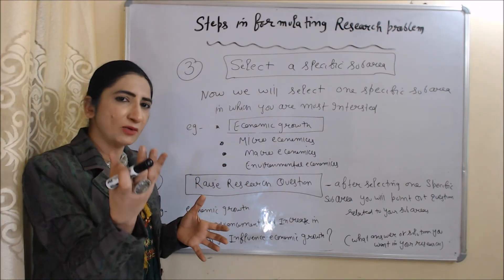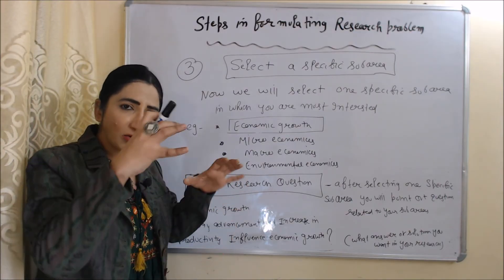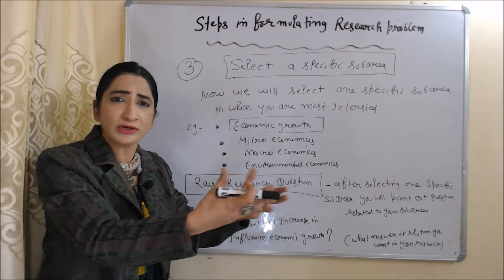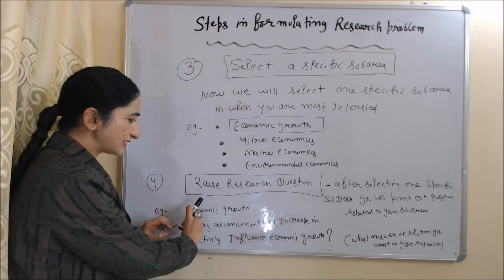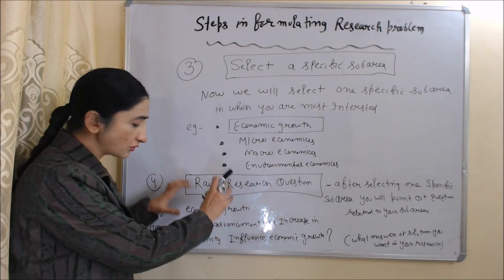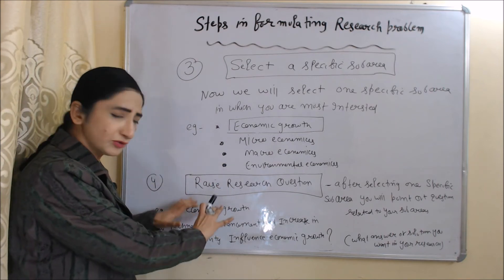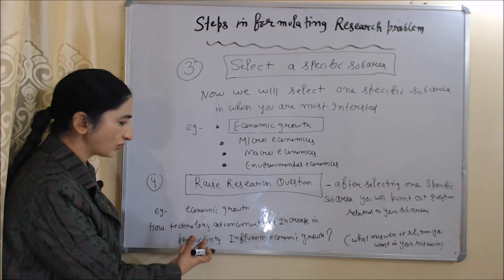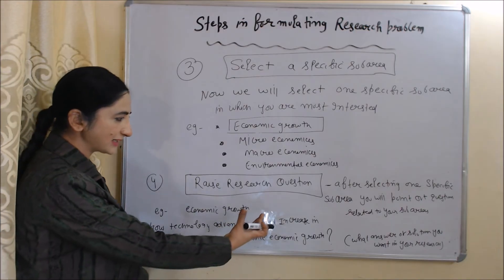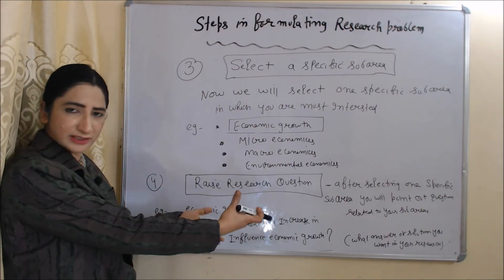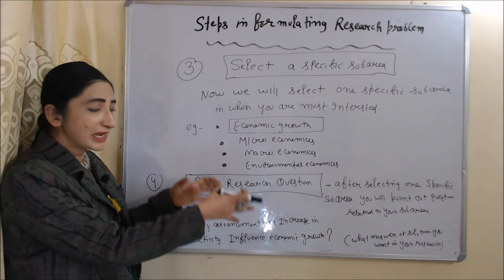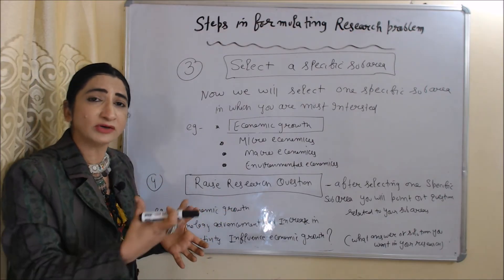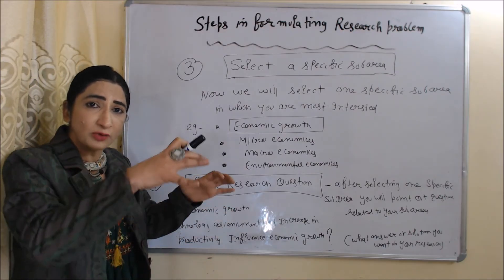The next step is to raise a research question. After selecting a sub-area, you will point out a question related to it. Your sub-area is economic growth, so suppose your question is: how do technological advancement and increase in productivity influence economic growth? By raising this question, you can know exactly what answer or solution you want through your research.